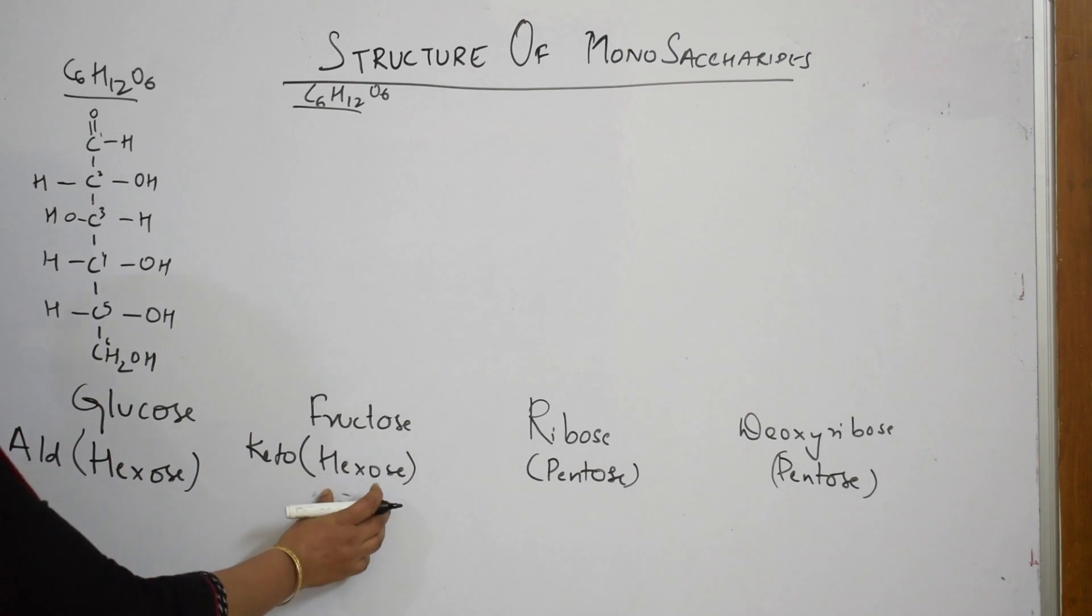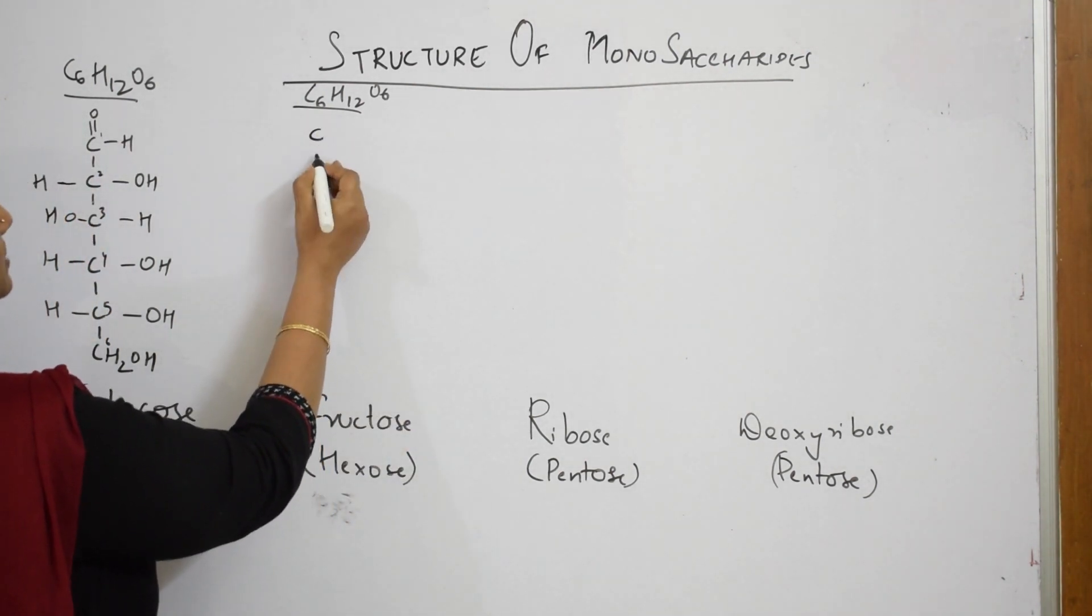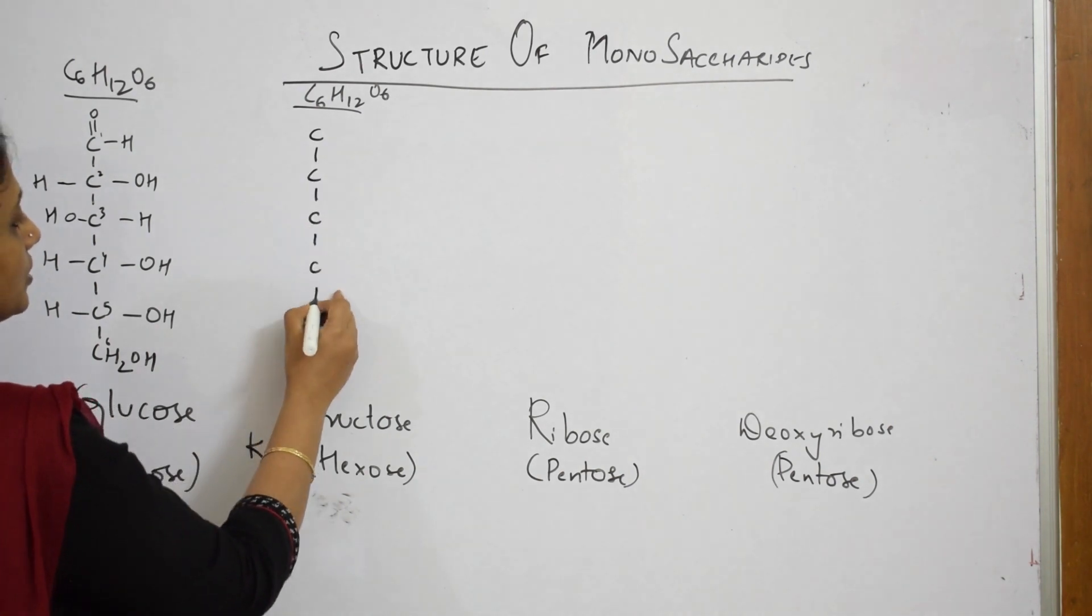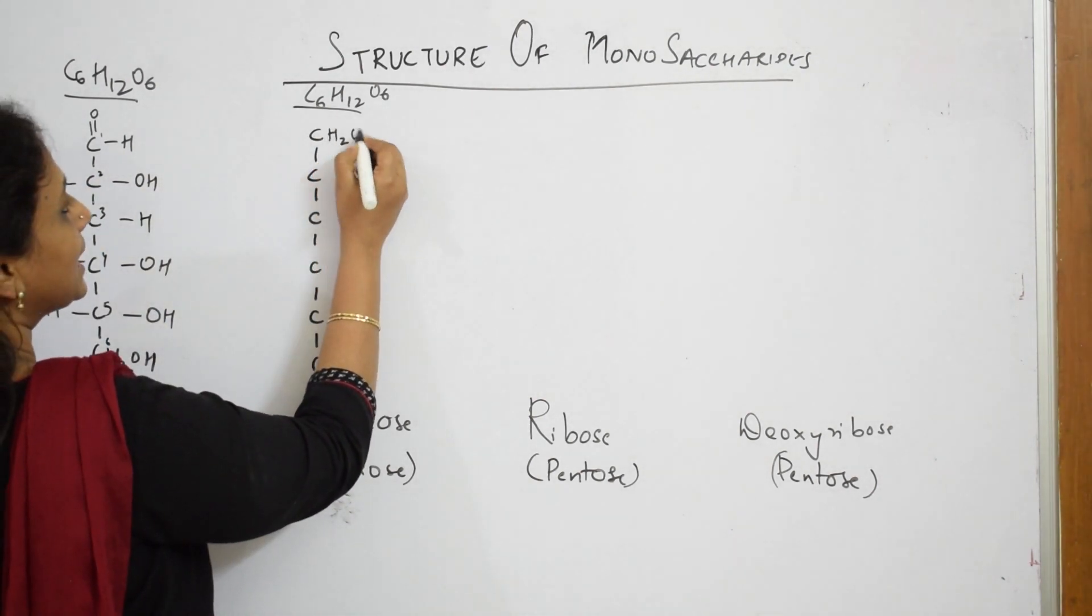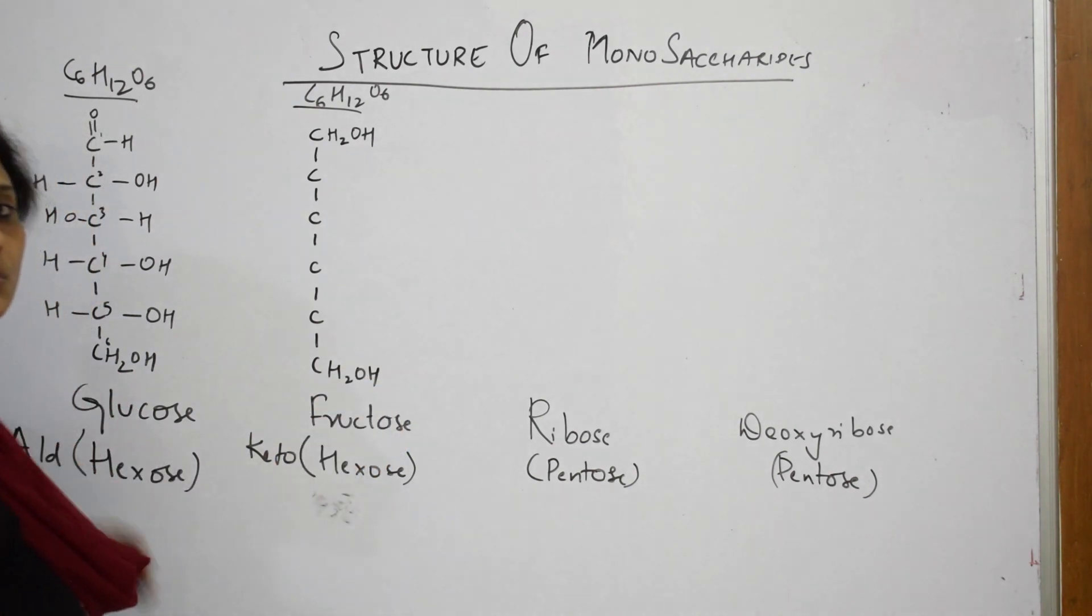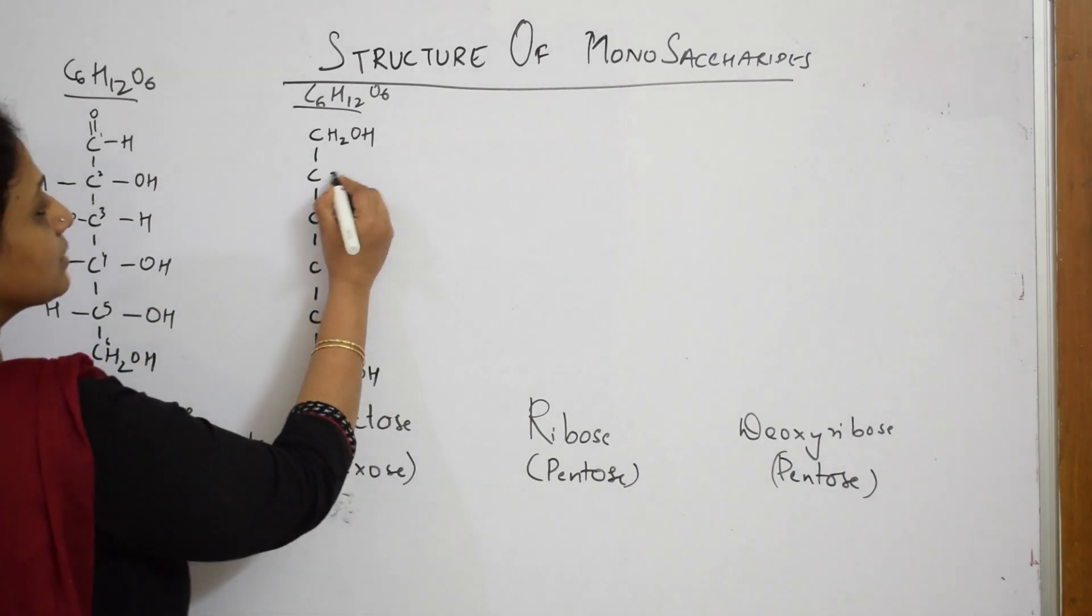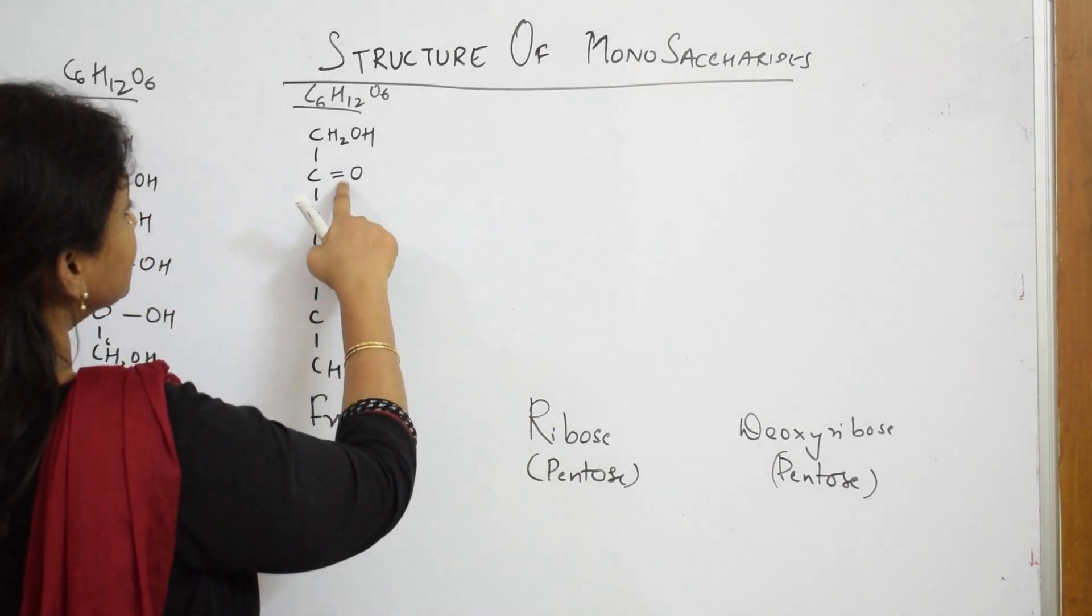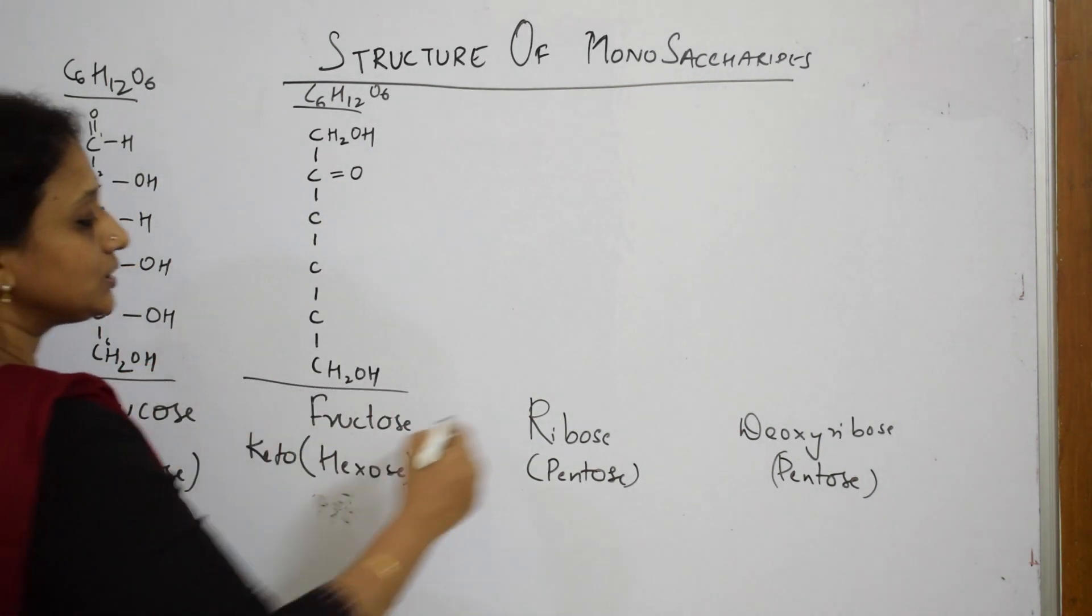Fructose also is a six carbon chain. In your first, one, two, three, four, five, six. Your first carbon and the last carbon, you have CH2OH groups. In the second carbon, you have a ketone group. Double bond is ketone. Because of the presence of ketone, it is called ketohexose. This is your ketone group, second carbon.